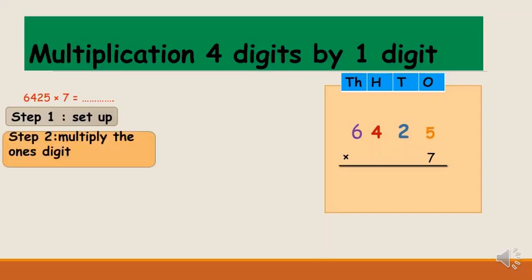The next step is multiply the ones digit. 7 times 5 is 35. 35 is a double digit, so we put 5 down and 3 at the top of the tens column.